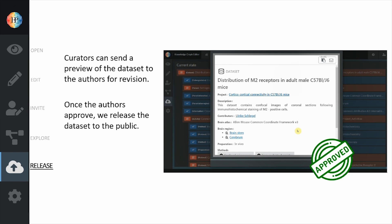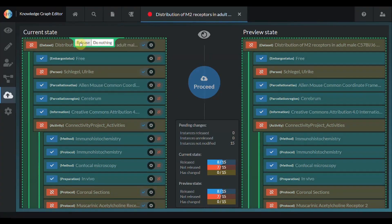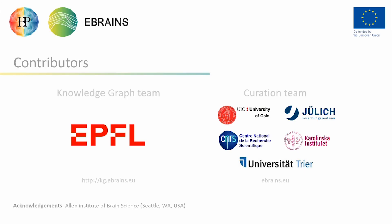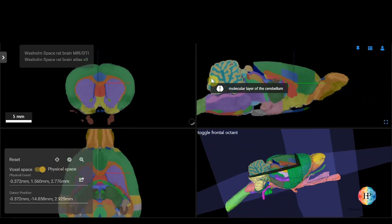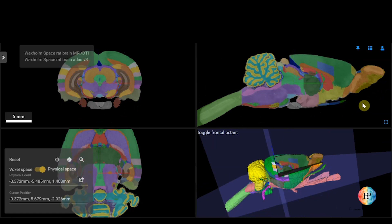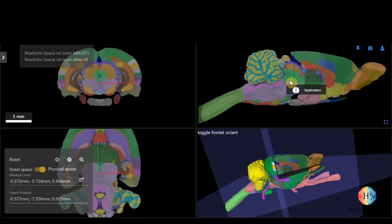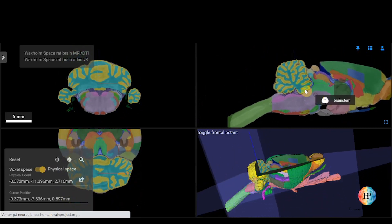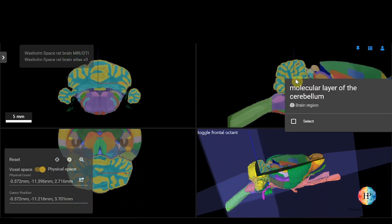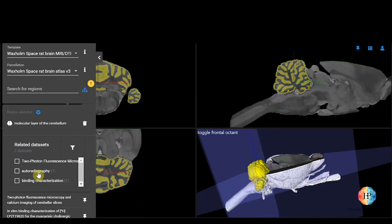Curators can preview the dataset and send this to the authors for revision, and then we release the dataset onto the Knowledge Graph search to link to the interactive Atlas viewers. Here is a small preview into the RAT Atlas coupled with the datasets. You navigate and select a region in the 3D viewer, and you can directly access and view the dataset card from the eBrains Knowledge Graph search.